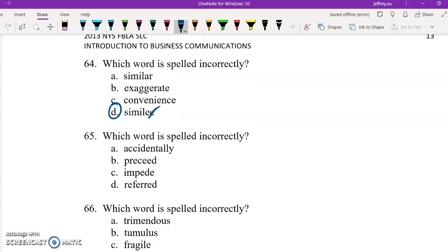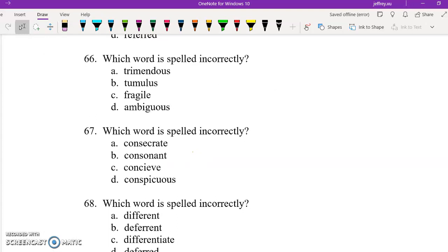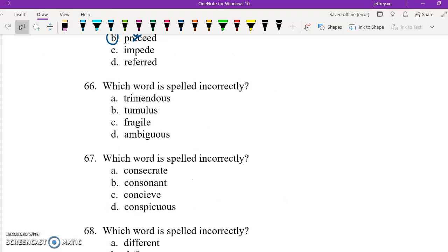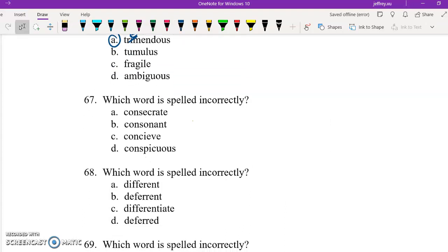65, E in proceed should actually be replaced with an O, proceed. So B is your correct answer here. 66, tremendous should not have an I. Rather, it should have an E. A is your correct answer here. 67, if you think back to that elementary school rule, I before E except after C. You have a C here, so it should be E, I. Sorry, not I, E. So conceive is spelled incorrectly in this question.